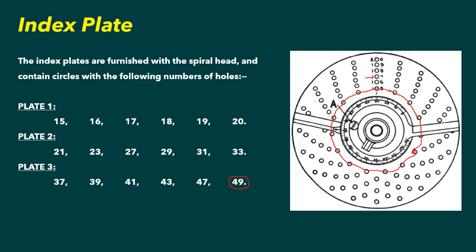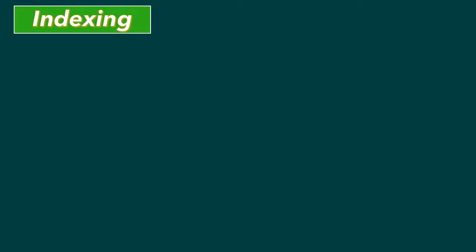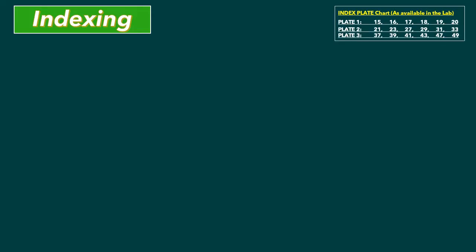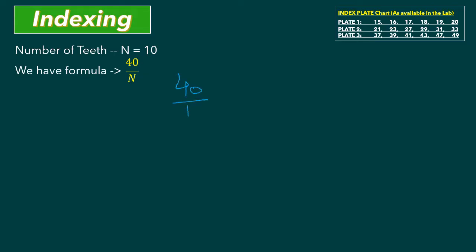Now I am going to explain indexing in detail. For indexing you should have the index plate chart for the plates available in the lab. We have these three plates with these numbers. Here I will use the number of teeth as 10, and we have the formula 40 over N, where 40 is the constant value and N will change as per the question. So 40 over 10 equals 4.